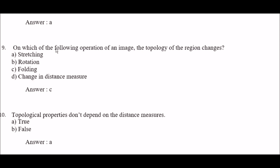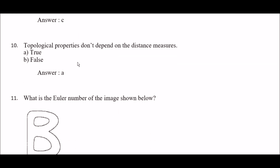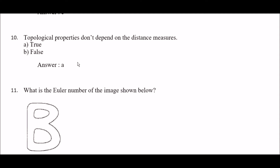Next question: on which of the following operations of an image does the topology of the region change? Option A: stretching, option B: rotation, option C: folding, option D: change in distance measure. The right answer is option C — folding. Next: topological properties don't depend on the distance measure — true or false? The right answer is true.